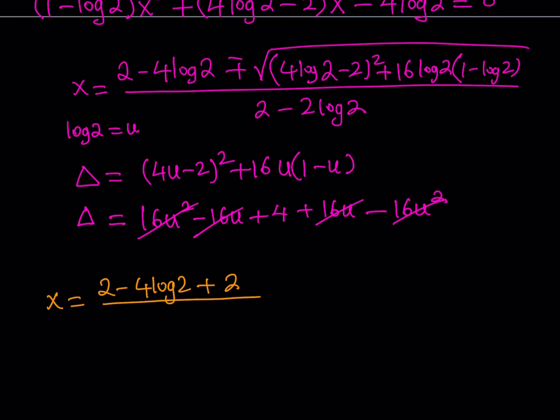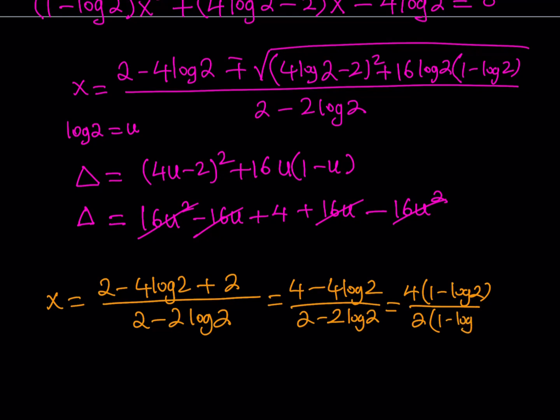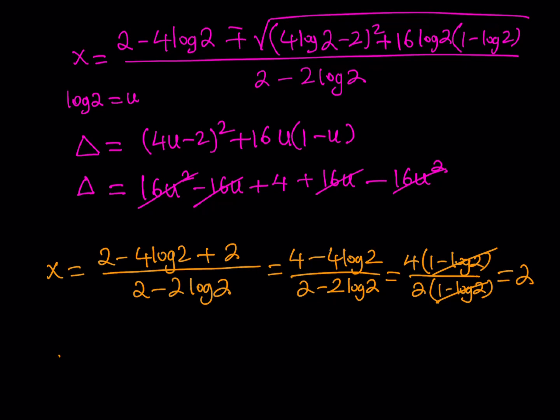I can write it as x equals (2 - 4 log 2 + √4)/(2 - 2 log 2), which is 2 divided by (2 - 2 log 2). Let's simplify this. This is going to give me (4 - 4 log 2)/(2 - 2 log 2). And if you factor out a 4 here, you get 1 - log 2. Same thing. Cross these out and you end up with x equals 2. Beautiful. So it just verified that x equals 2 is a solution. We knew that. But what is the other solution? It's going to come from the other one.